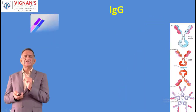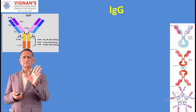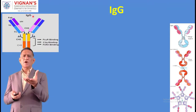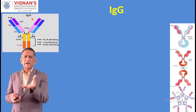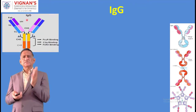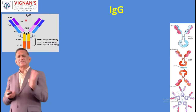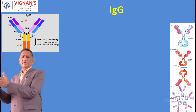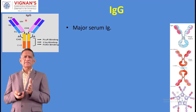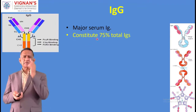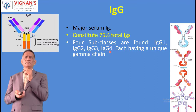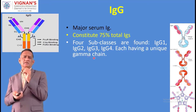Now let us see IgG. IgG is the predominant immunoglobulin; whenever any infection occurs, IgG is dominant. IgG is also used in plasma therapy. IgM is the first antibody to appear during infection, and IgG comes five to seven days later. IgG is the major serum immunoglobulin, constituting 75% of total immunoglobulins. There are four subclasses: IgG1, IgG2, IgG3, and IgG4, each having a unique constant chain.